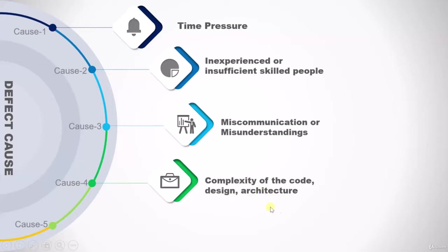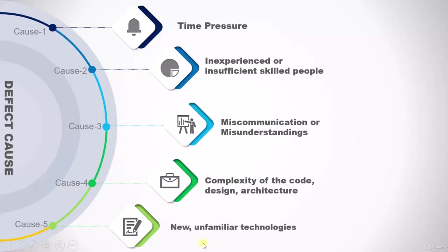The last point talks about new or unfamiliar technology. If there is a new technology on which you are working, since there is very little reference available for it, there is a possibility it will result in an error. So here we saw five different causes.